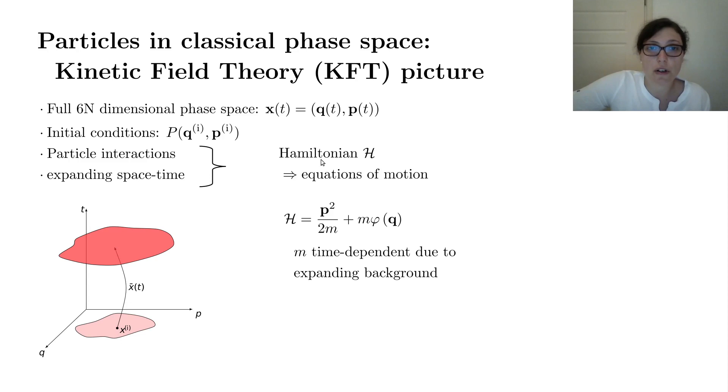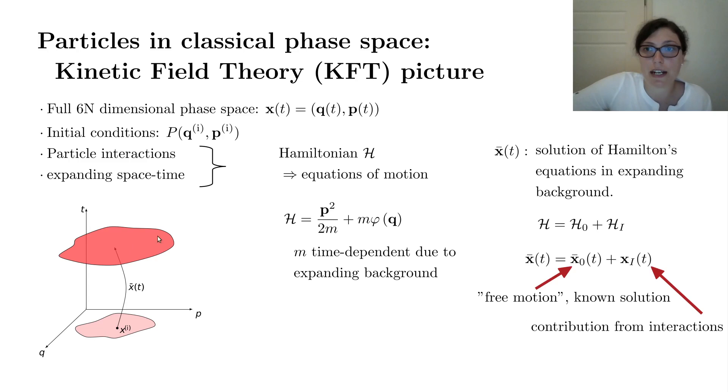Particle interactions and the expansion of spacetime, those are encoded in a Hamiltonian H. The Hamiltonian in the cosmological context is given by these two terms: a kinetic term p²/2m and a potential term. Now note that since the spacetime is expanding, our mass m will be time dependent. Now the flow from initial to a final state is governed by the solution of Hamilton's equations of motion in the expanding background. Since we don't know the full solution to the n-body problem, we need to apply some tricks. The first trick is that we split our Hamiltonian into a free and an interacting part, such that due to the linearity of the equations of motion, our solution is split into a free motion, a contribution for which we can know the solution, and a contribution from the interactions for which we not necessarily know the solution.